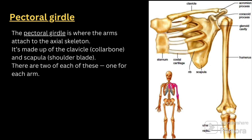The pectoral girdle is where the arms attach to the axial skeleton. It is made up of the clavicle — the collar bone — and the scapula — the shoulder blade. There are two of each, one for each arm.